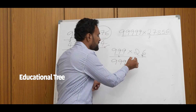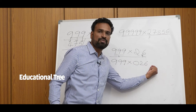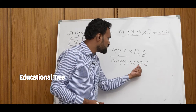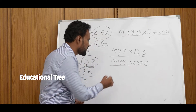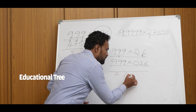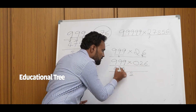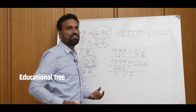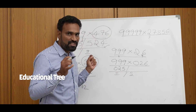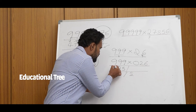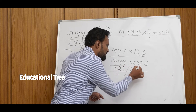For example, 999 into 026. If you have fewer digits, you add leading zeros to make it a 3-digit number. Now we have three nines and three digits. For the first part, apply one less than 026, which is 025. For the second part, subtract each digit of the first part from 9: 9 minus 0 is 9, 9 minus 2 is 7, and 9 minus 5 is 4.